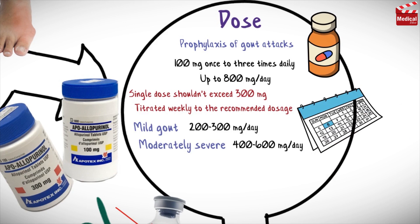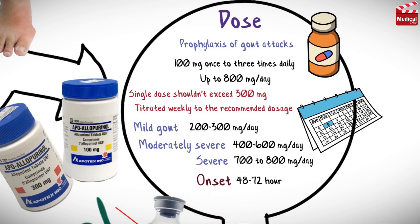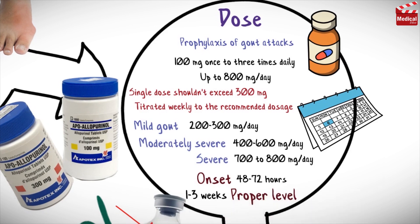For severe conditions, the dose is 700 to 800 milligrams per day. The onset of action of this drug is 48 to 72 hours for decline of serum uric acid level, and one to three weeks to achieve the proper level.